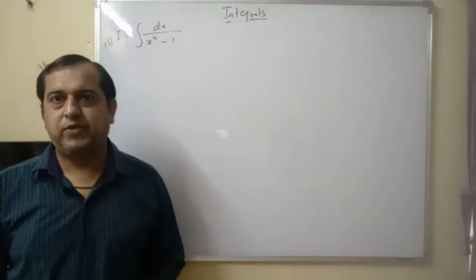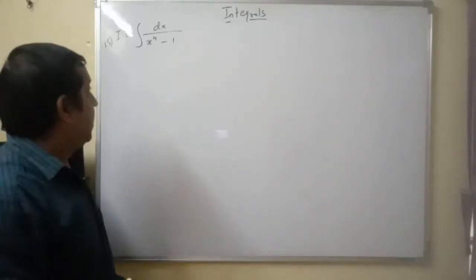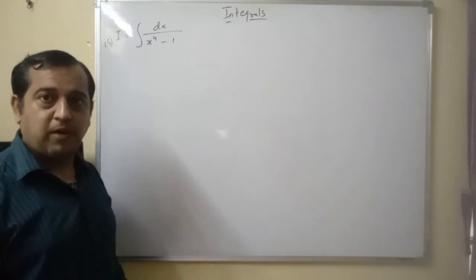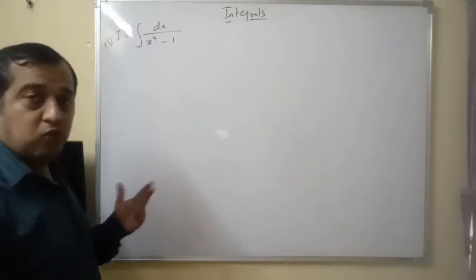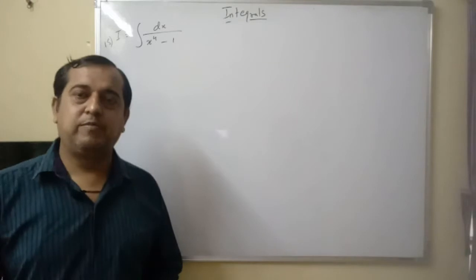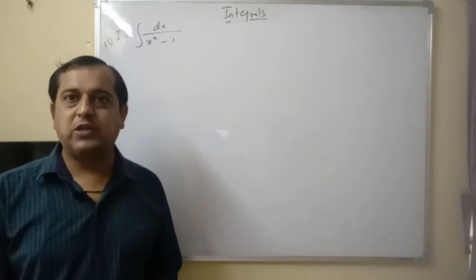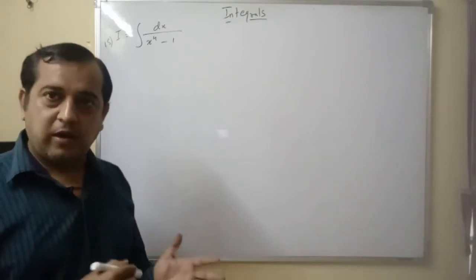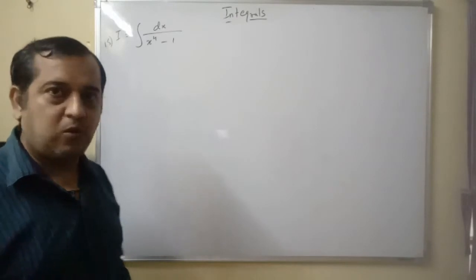Okay, proceeding further, we come to question number 15 of exercise 7.5. I equals integral dx upon x raise to 4 minus 1. Integral dx upon dx, that is integral from integral, means upper 1 hai. The degree is 0, and it is x raise to 4. Degree is 4, means it is a proper fraction.